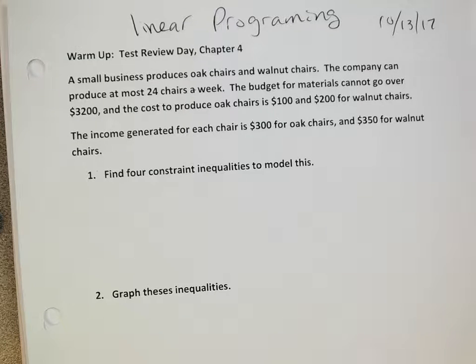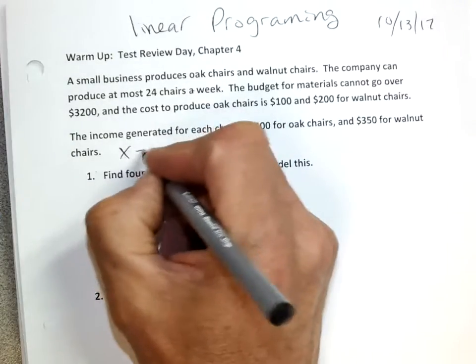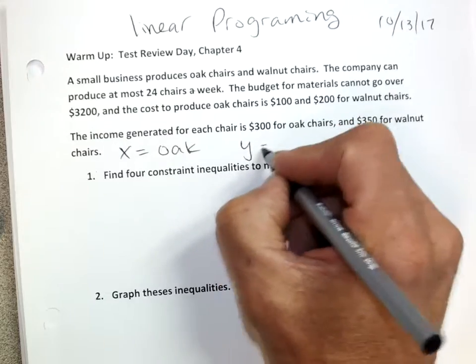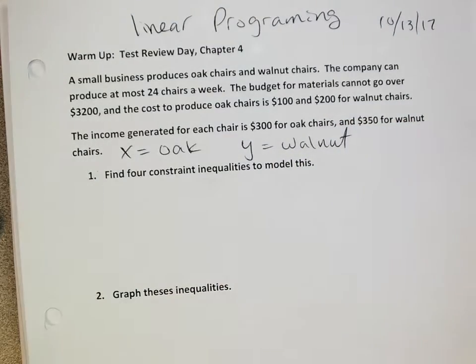Those are the parameters or the restrictions. We're going to have to shade, so we know we're going to have inequalities. And we're going to get some corner points and plug it into some objective function. So, once again, let's read the problem and see what's going on. A small business produces oak chairs and walnut chairs. The company can produce at most 24 chairs a week. The budget for materials cannot go over $3,200 and the cost to produce oak chairs is $100 and $200 for walnut chairs. The income generated for each chair is $300 for oak chairs and $350 for walnut chairs.